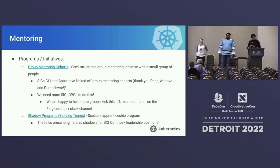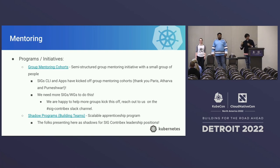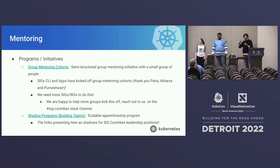In the mentoring subproject, we have a few programs and initiatives. We have group mentoring cohorts — semi-structured group mentoring initiatives with a small set of people paired with existing reviewers or approvers from a particular group. In the past month, we had SIG CLI and SIG Apps kick off group mentoring cohorts, which was a really big milestone. We need more SIGs and working groups to do this. If you are a SIG or working group that would want to run one of these cohorts to foster the next set of reviewers and approvers, please reach out to us on the SIG Contribex Slack channel or email list.